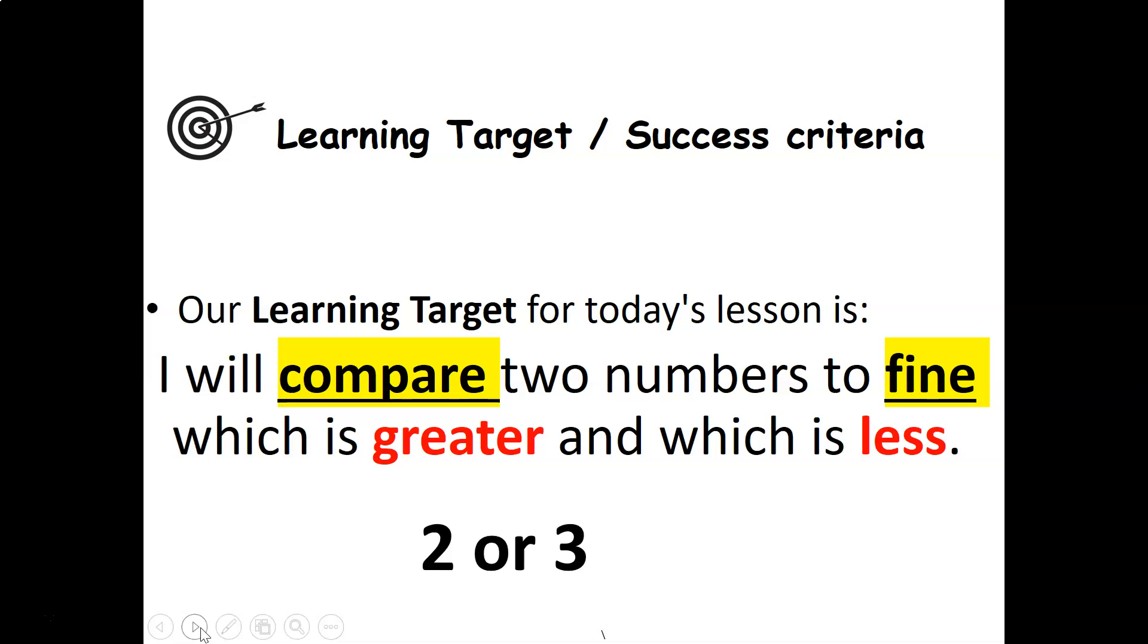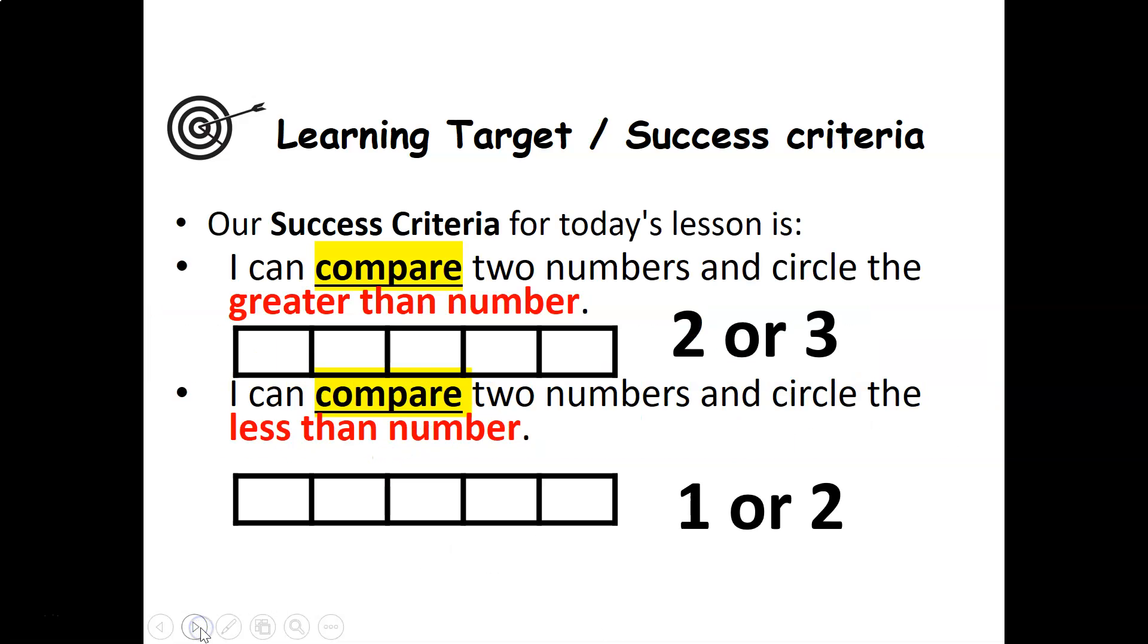So we compared the two numbers. I can compare two numbers and circle the greater than number. So let's look right here. How many circles are there? One, two, three. Two or three. Which is greater? Which is more? Three. Three is more, so I circled it.